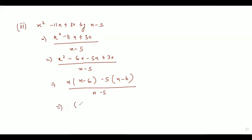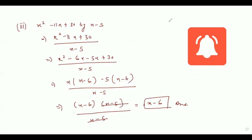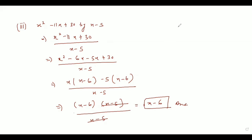In our next step, we have x minus 6 times x minus 5, divided by x minus 5. This x minus 5 will get cancelled with the denominator x minus 5, and we are left with x minus 6 as our answer. That is the full solution of the third part of question number 3, Exercise 7.5.